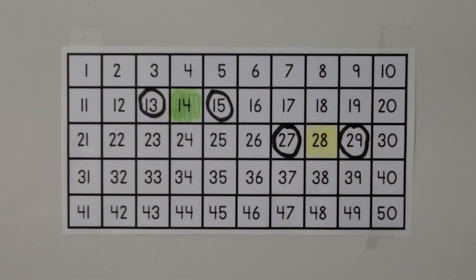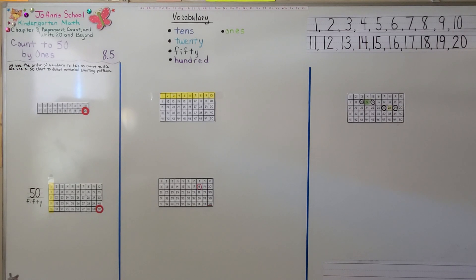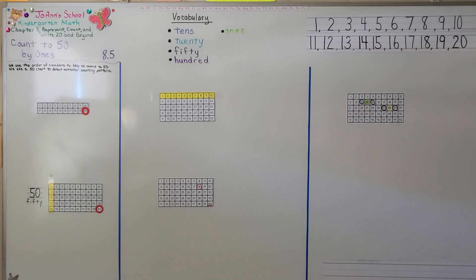We've answered the riddles. You can practice counting to 50 using a 50 chart. Our next lesson, 8.6, we're going to count to 100 by ones. Have a wonderful day. Please hit the like button and I hope I'll see you next time. Bye bye.